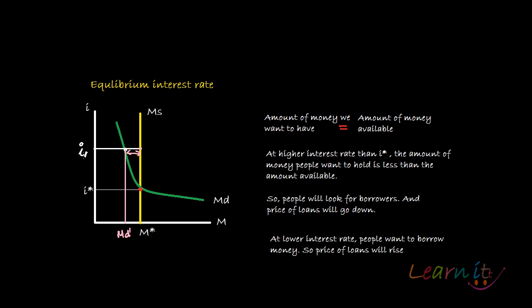Those lenders will look out for borrowers and tell them to take loans, but borrowers say they do not want that much money at such a high interest rate. So equilibrium would be maintained at the point when lenders decrease the interest rate and reach the rate at which the demand for money equals the supply for money.